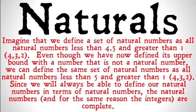However, we can define the same set of natural numbers by saying the natural numbers that are less than 5 and greater than 1. It defines the same set of numbers, and both 5 and 1 are within our set of natural numbers. The point is we can always define any subset of the natural numbers as being bounded by other natural numbers — there's no point where some set of natural numbers can't be defined as bounded by other natural numbers.